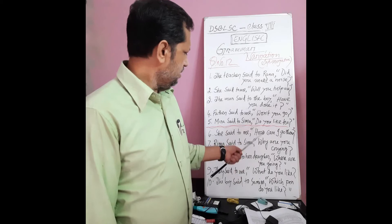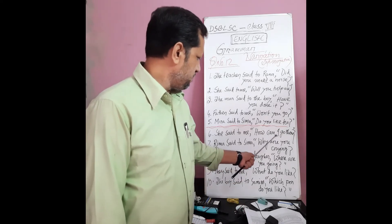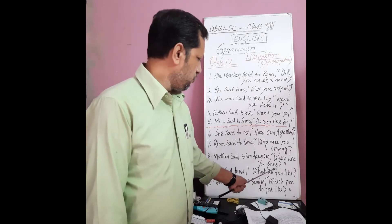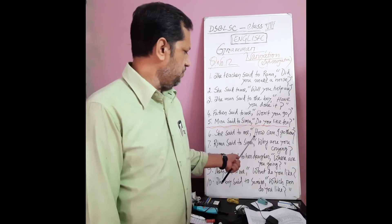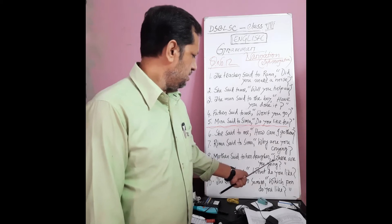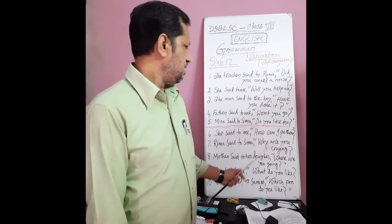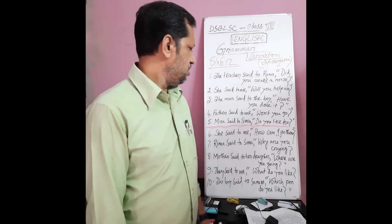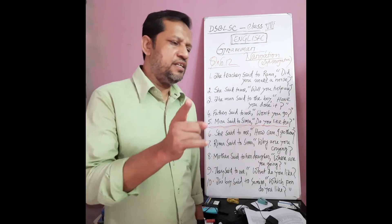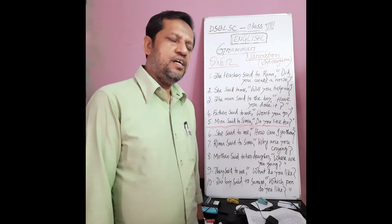But when WH-words are used and there is no yes or no answering, then the reported speech within the inverted comma starts with a WH-word. WH-words are: why, where, what, which — and 'how' is also called a WH-word. So at the time of WH-word questions, you need not use 'if' or 'whether.' You have to use the WH-word which is given in the question.